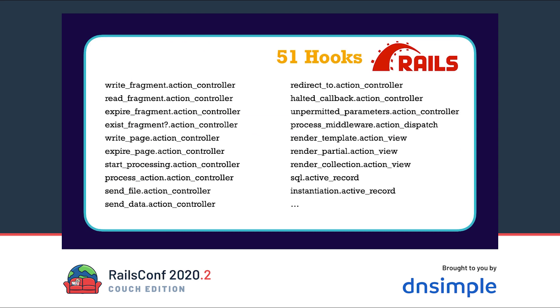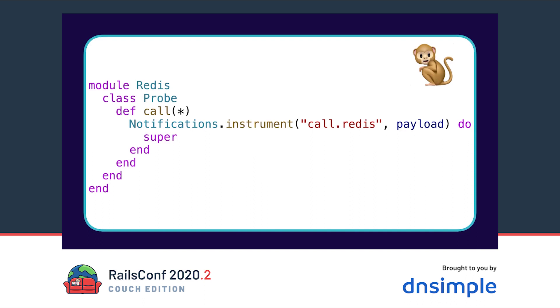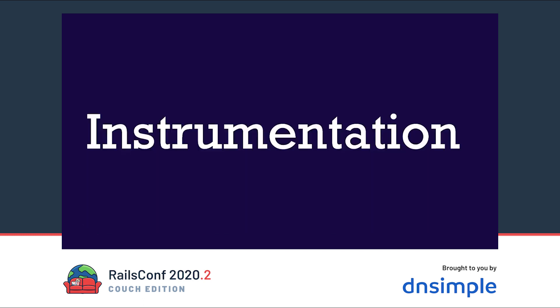Ruby on Rails already ships with more than 50 hooks into the framework, but sometimes this is not enough and we want to also instrument methods from external libraries like Redis or Memcache. In this case we need to install a monkey patch and wrap the function into an instrument block which we can later subscribe to. In this example we just monkey patched the call method of the Redis library. In this chapter we had a look at Active Support and its instrumentation framework, and we now know which hooks Ruby on Rails already provides.